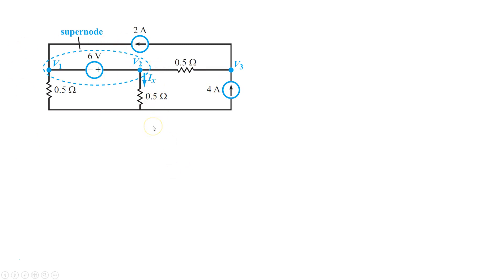Let's start out by first placing a source ground reference node. Since the reference node is not on either side of the voltage source, that is what makes this 6 volt source a super node. Be very careful in this particular problem because the polarity of the 6 volt has plus towards the V2 side and minus towards the V1 side.